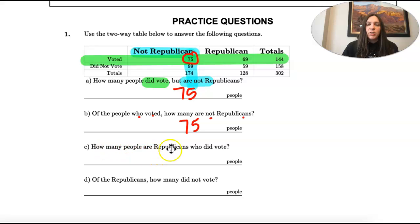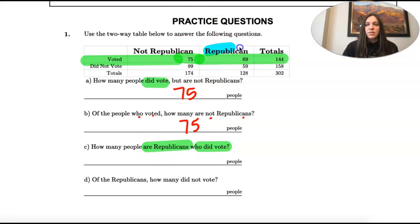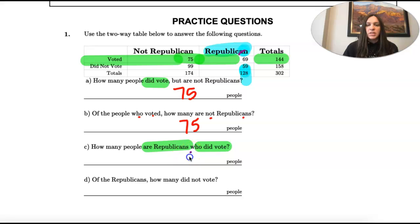How many people are Republicans who did vote? We're still looking at people who voted — these people that voted — and now we want them to be Republicans, so we're going to switch to the Republican column and look at where they intersect. There were 69 people who are Republican who did vote.